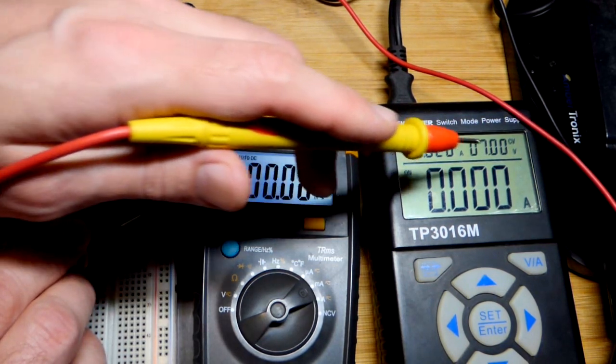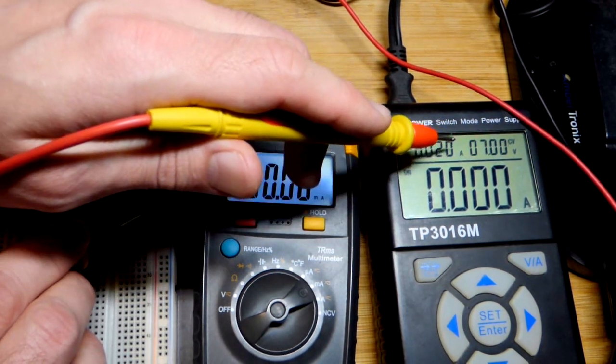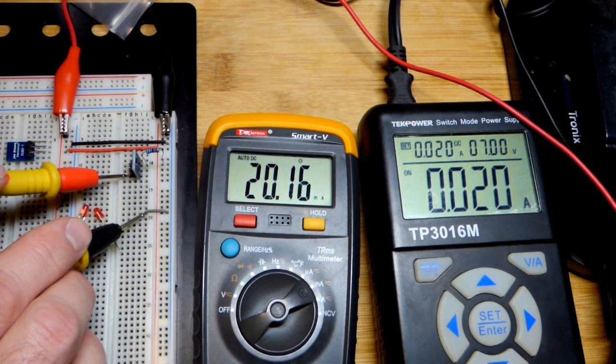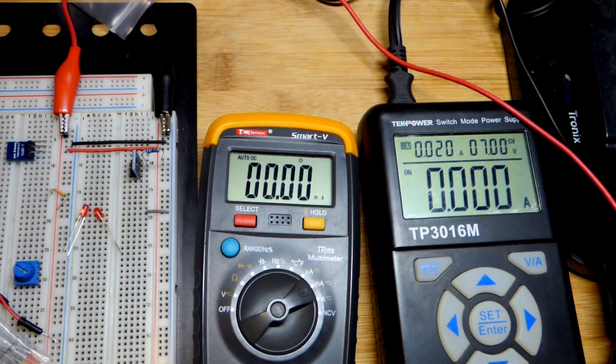It may be a little hard to see, but it says CV right now. When current is being limited, it says CC for constant current. That's how we know it's backwards.